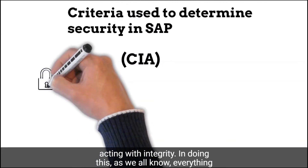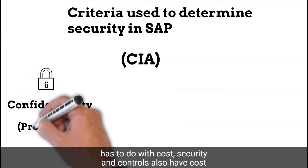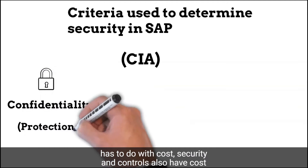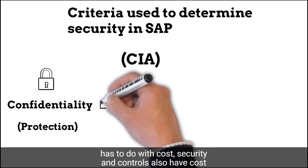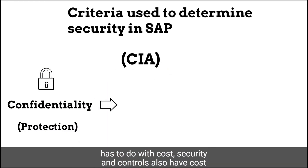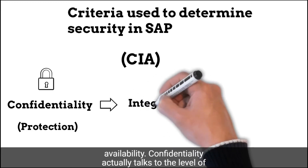In doing this, as we all know, everything has to do with cost. Security and controls also have cost implications. There is a triad that we're all familiar with — that's the CIA triad: confidentiality, integrity, and availability.